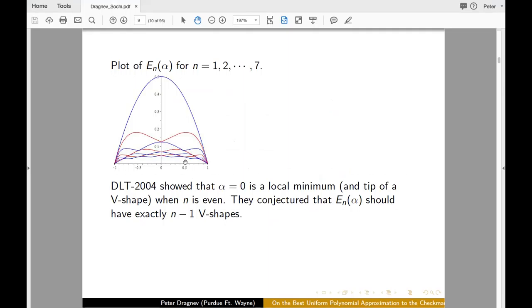And let me quickly say a little bit about what was proved in 2004. If alpha was a local minimum when n is even. So these are the red colored graphs here. And you can see that's actually tip of a V. So that's why it's local minimum. What we prove now is a conjecture of Shekman. Originally, Borislav Boyanov posed that the local maximum is attained when alpha is zero, but then Shekman corrected it. Turns out this is indeed minimum for n even.